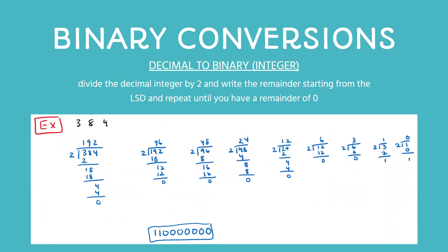The same process applies regardless of whether it's an integer, decimal, or fraction. So in this case, to convert 384 — which is the decimal number — to binary, we keep dividing it by two and the remainders are written in reverse. So 384 divided by two is 192, and that zero becomes the least significant bit. You keep doing that, and the very last step results in a one, which eventually becomes the most significant bit.